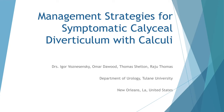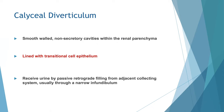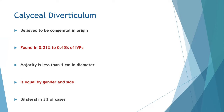Calyceal diverticula are smooth-walled non-secretory cavities lined with transitional cell epithelium, and they receive urine by passive retrograde filling. They are believed to be congenital and found in a small percentage of patients; the majority are less than 1 cm and there is no gender bias. They are bilateral in a few percent of cases.